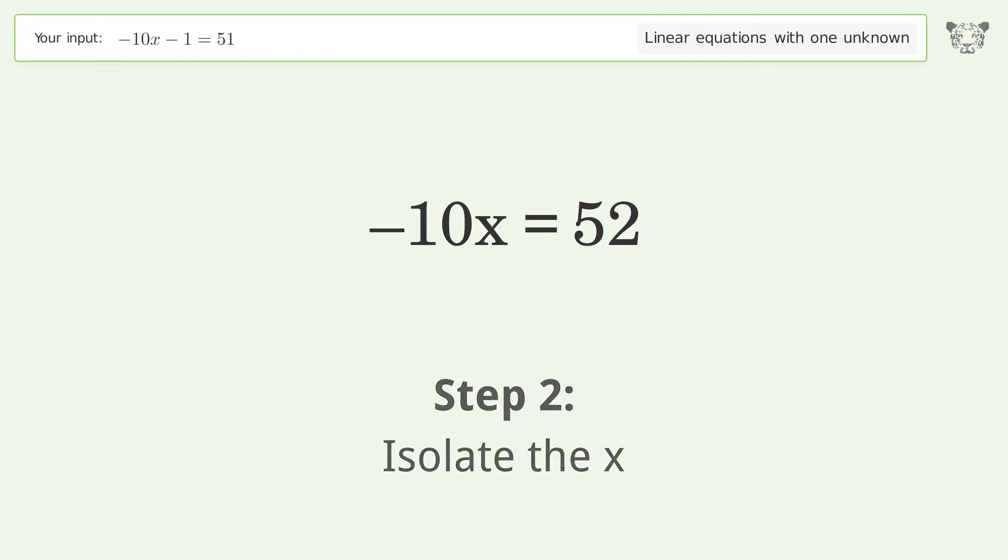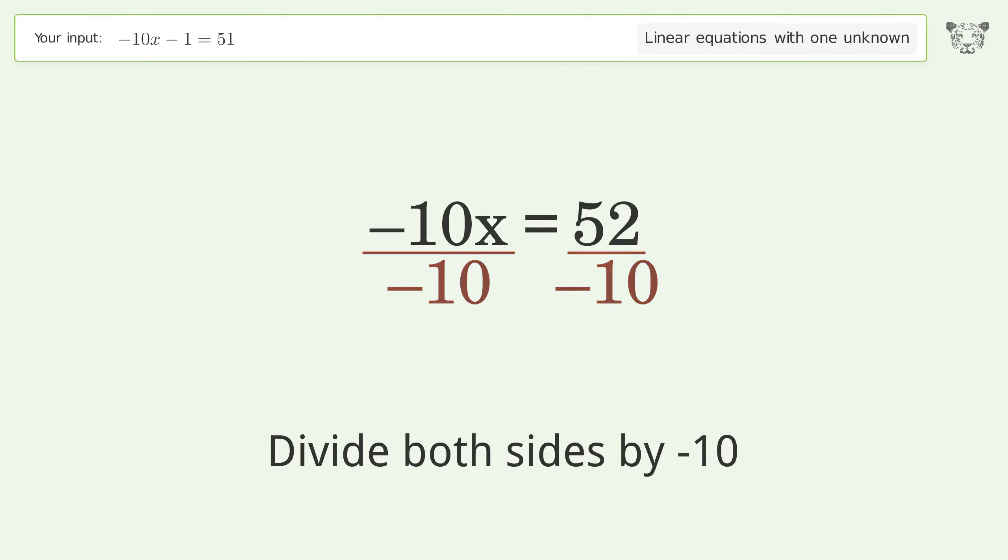Isolate the x. Divide both sides by negative 10. Cancel out the negatives.